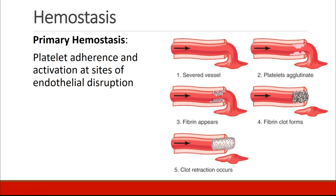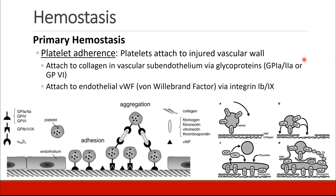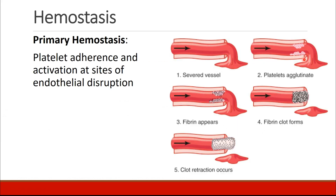When we talk about hemostasis, there are two parts: primary and secondary. Primary hemostasis involves the platelets — platelet adherence and activation at any site where the endothelium has been disrupted. So here we see a vessel that has a hole, the platelets collect over here, and that's primary hemostasis. Secondary hemostasis is the formation of this fibrin clot.